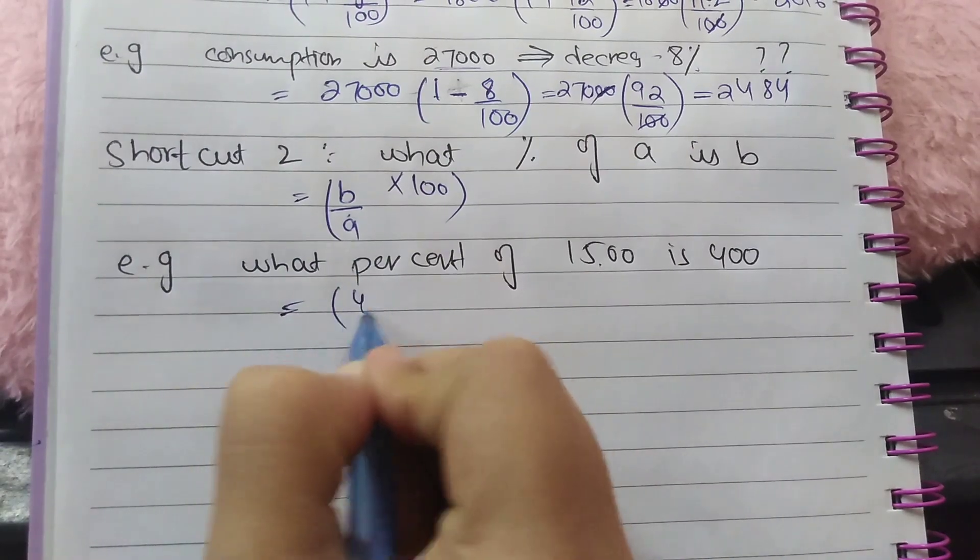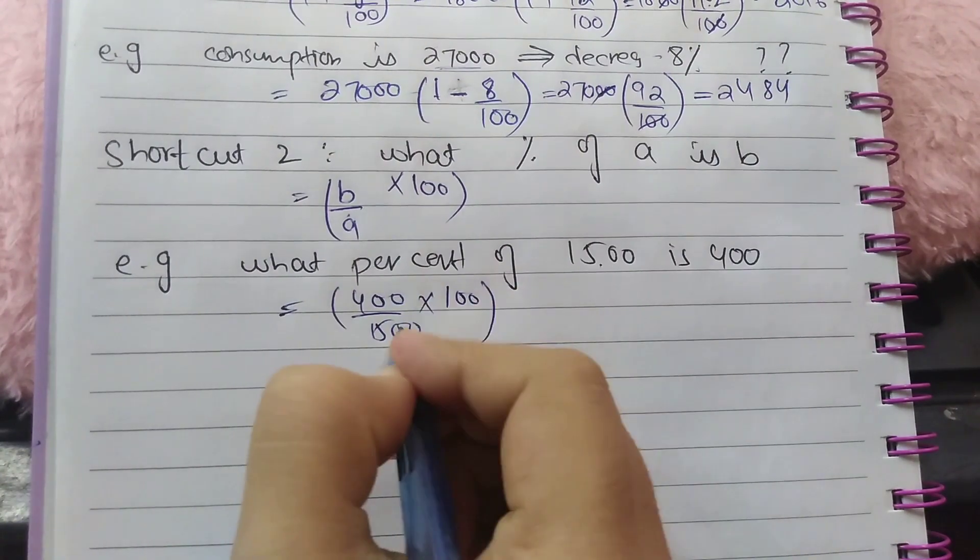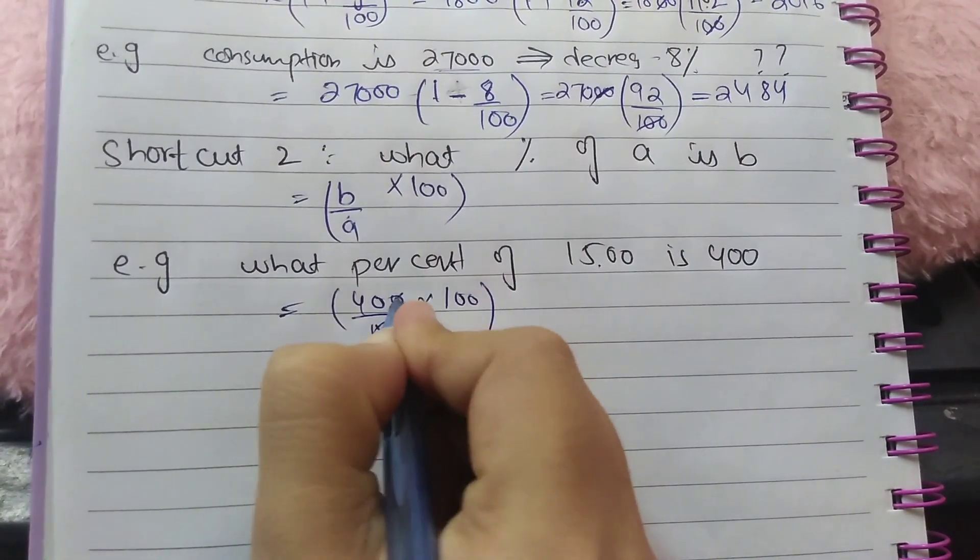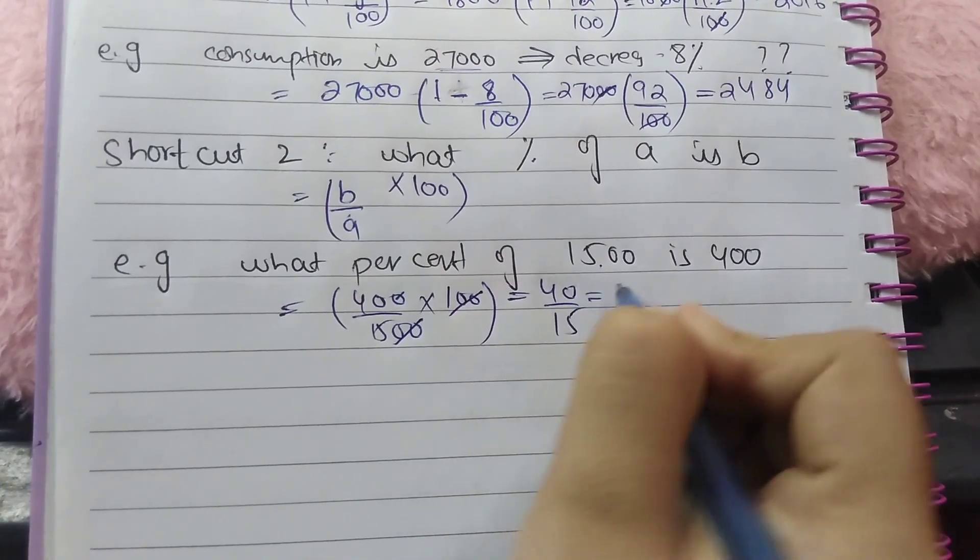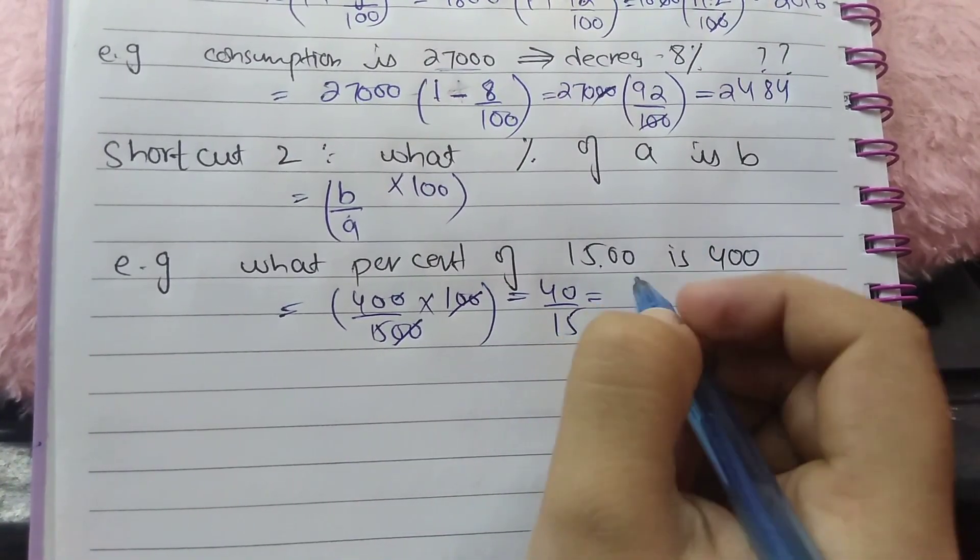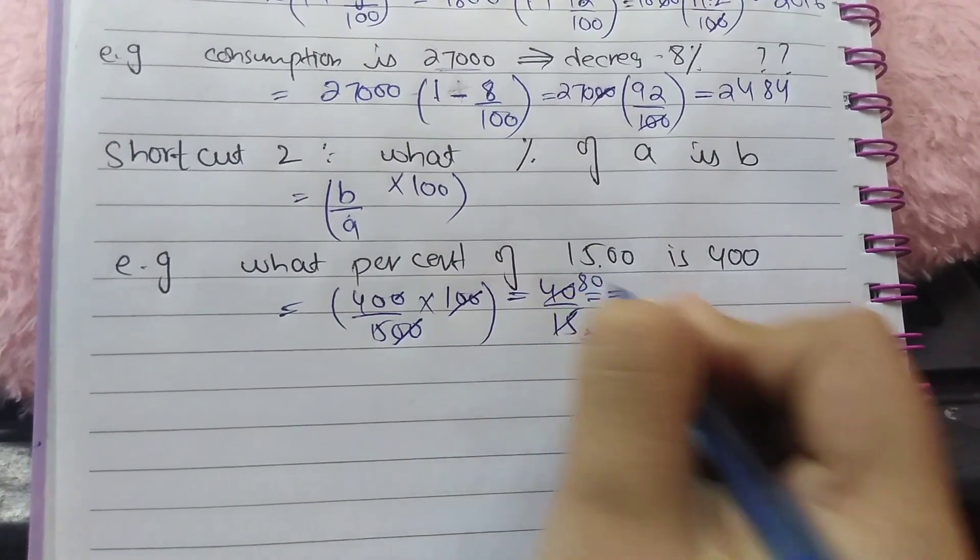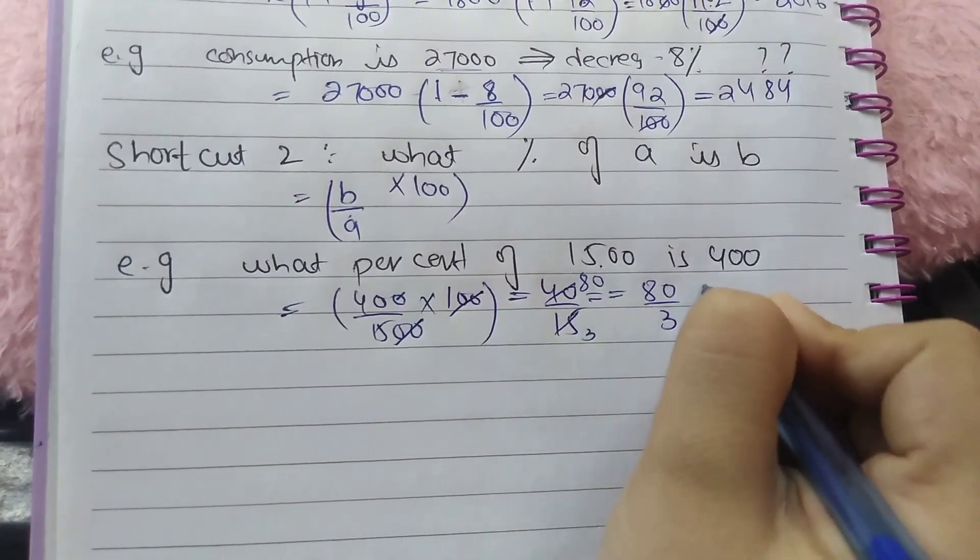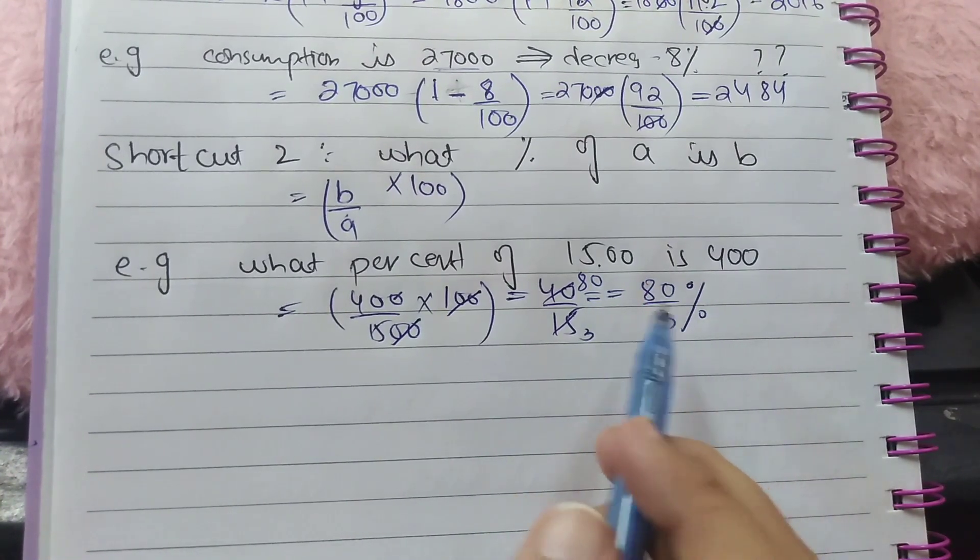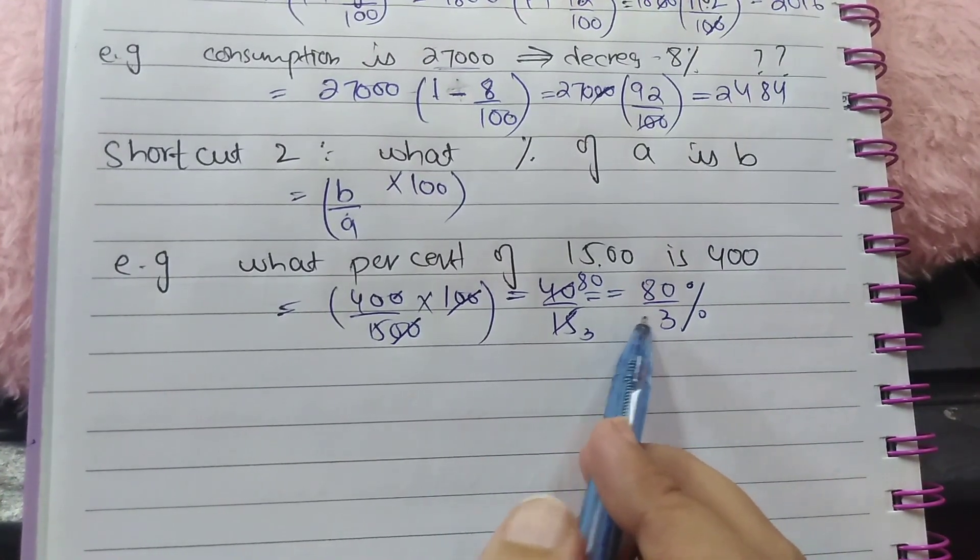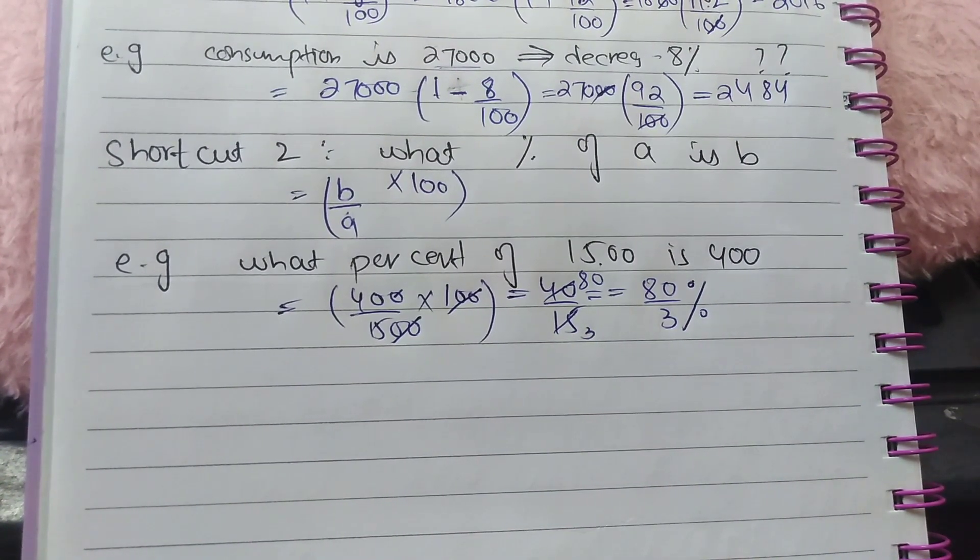Here this is B and this is A. So by applying this formula, 400 by 1500 into 100. Canceling zeros, 40 by 15, which is by cancelling by 5, 8 by 3 percent is the answer. You can reduce this to a mixed fraction.